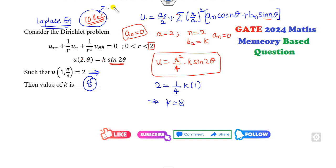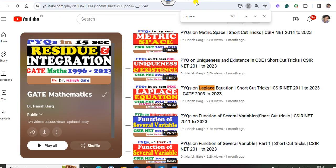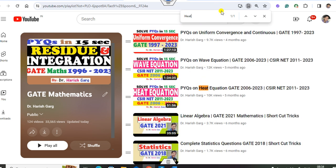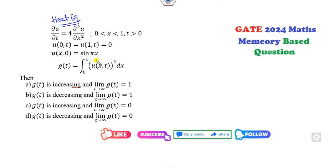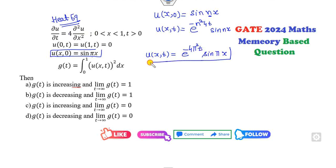The next question is the heat equation. You can refer to my heat equation lecture where fully shortcut tricks are available and you can solve each question in 15 seconds. The shortcut: when the solution is in the form sin(nx), the heat equation solution is e^(−n²t) · sin(nx). Applying this here, the solution is e^(−4π²t) · sin(πx).